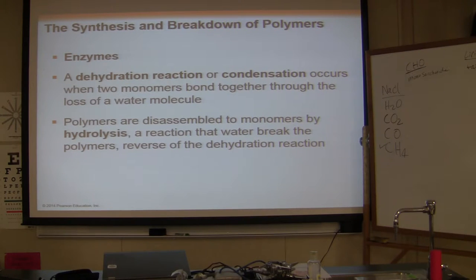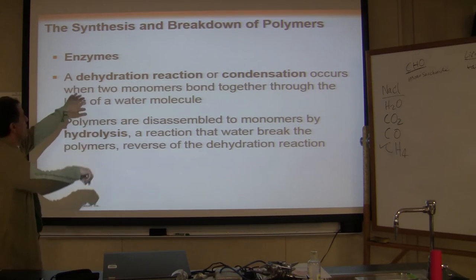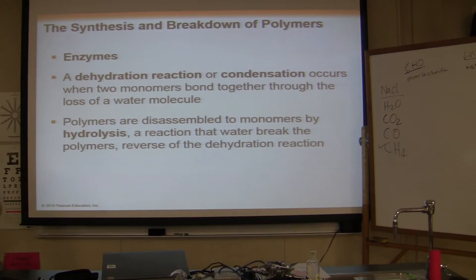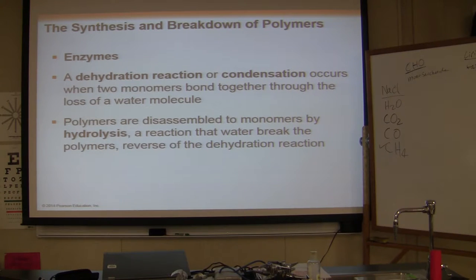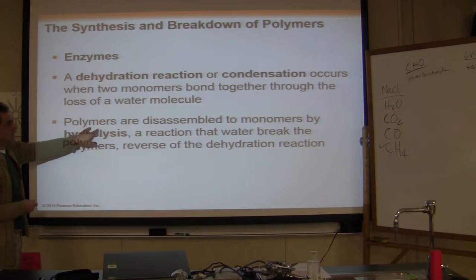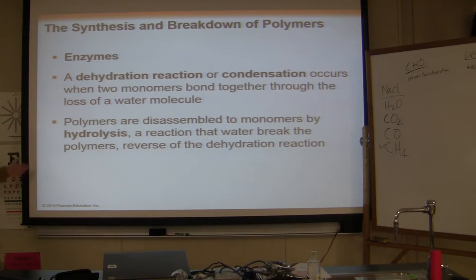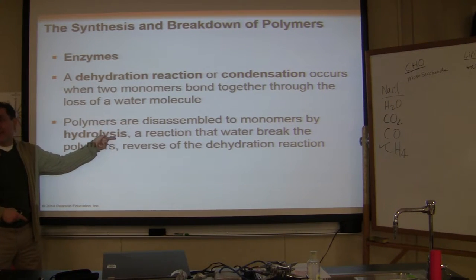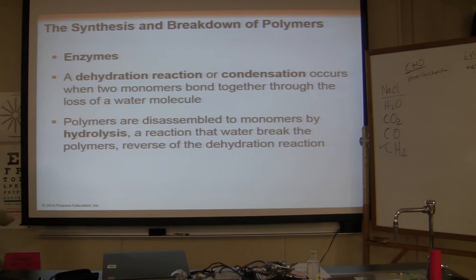Most biological molecules are very large and are built by assembling small molecules, or monomers, into long chains — the resulting molecules are called macromolecules or polymers. The process of linking monomers is called dehydration synthesis, involving removal of two hydrogen atoms and one oxygen atom to form water. The reverse process, in which water is added, results in hydrolysis.